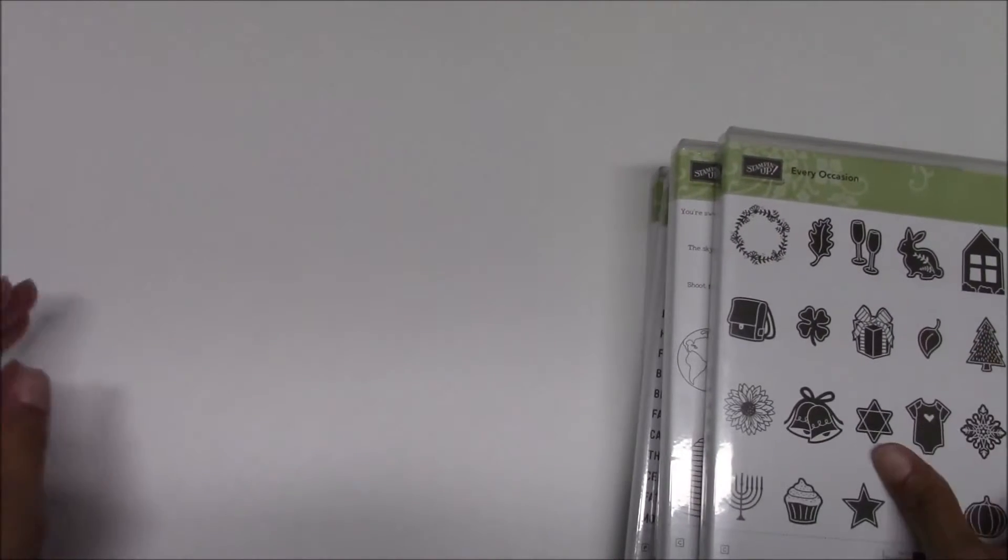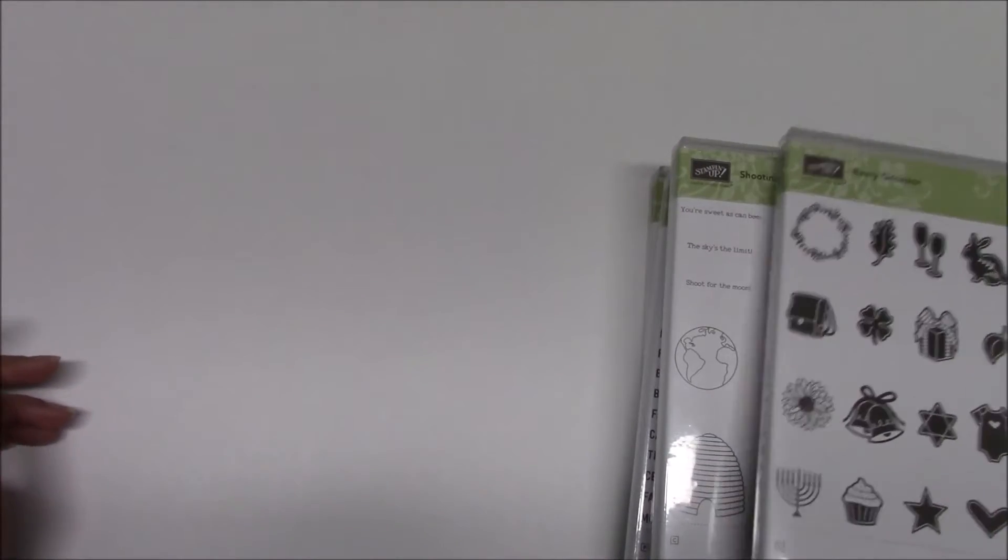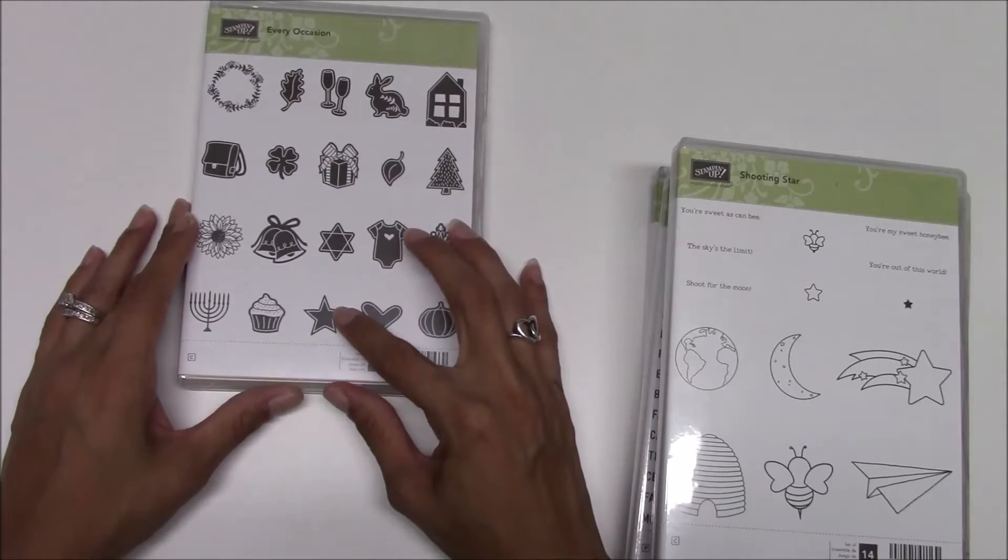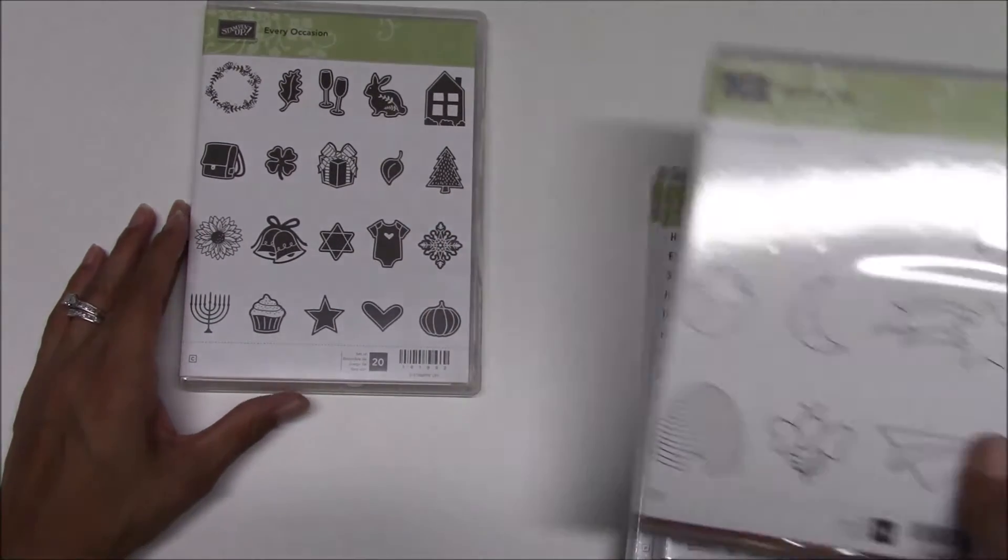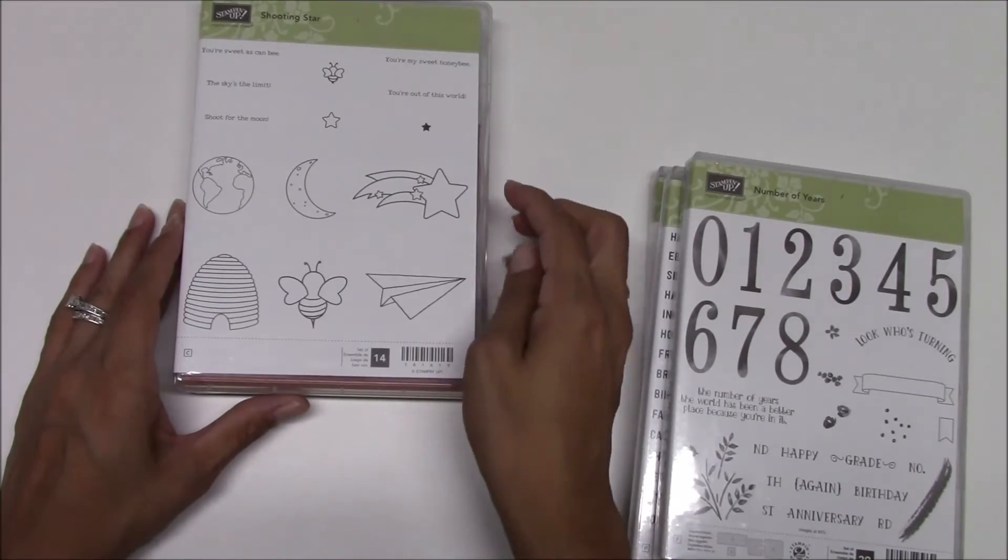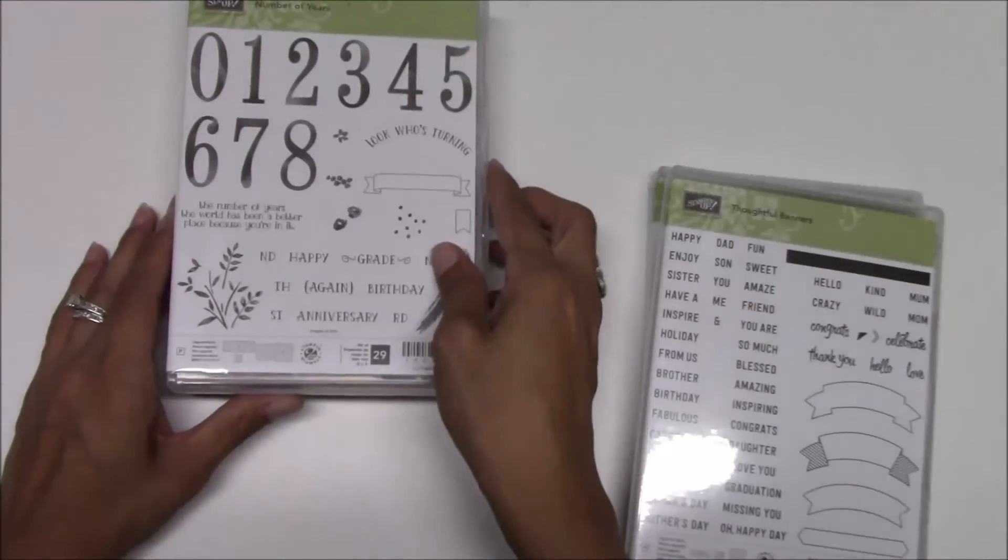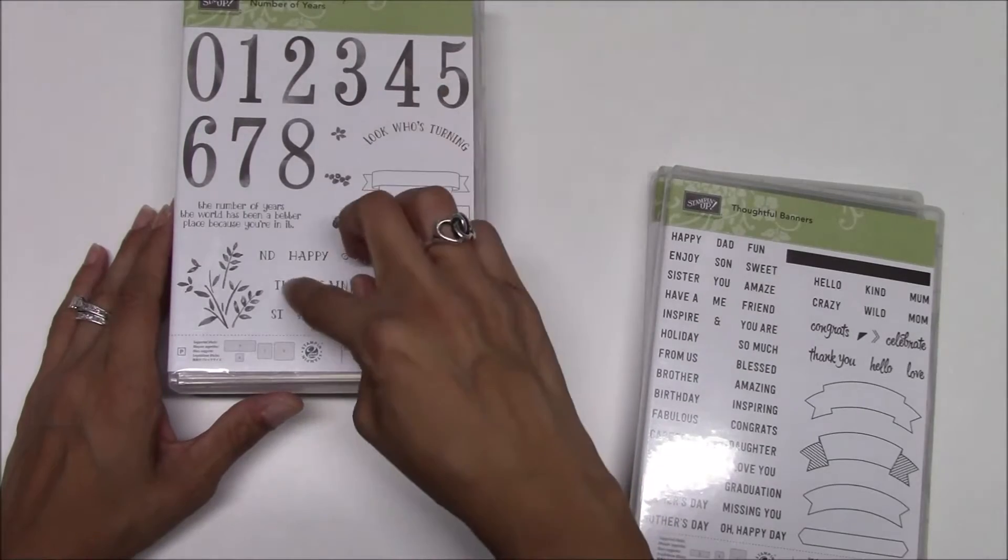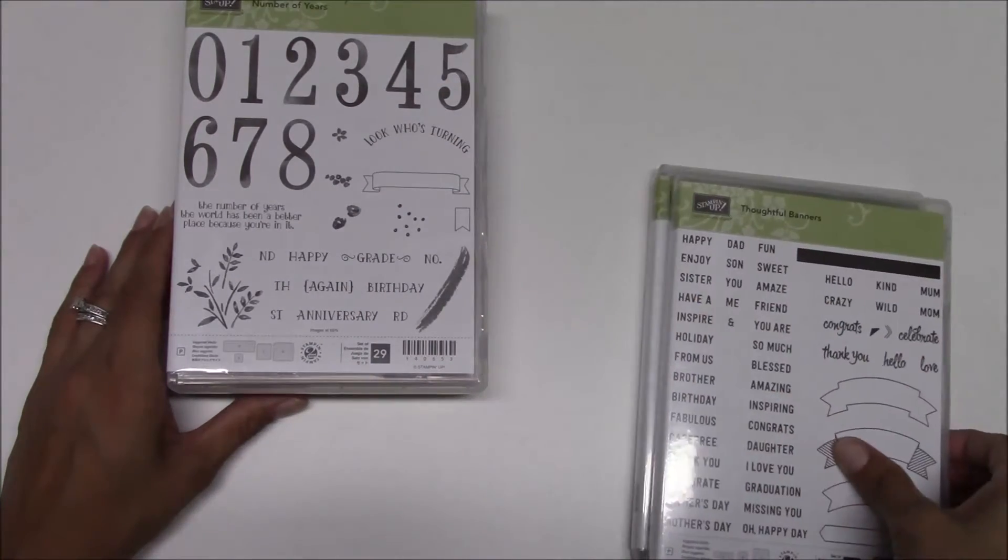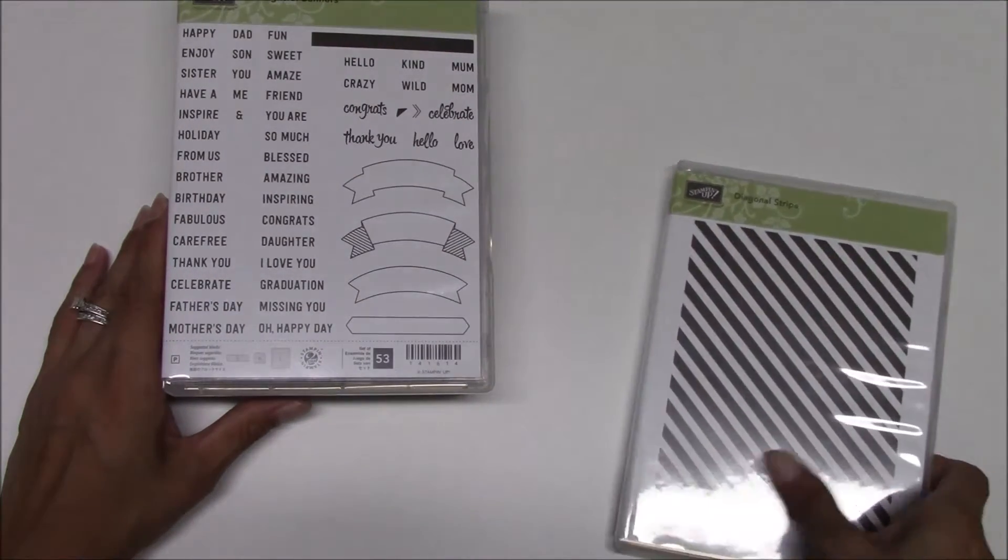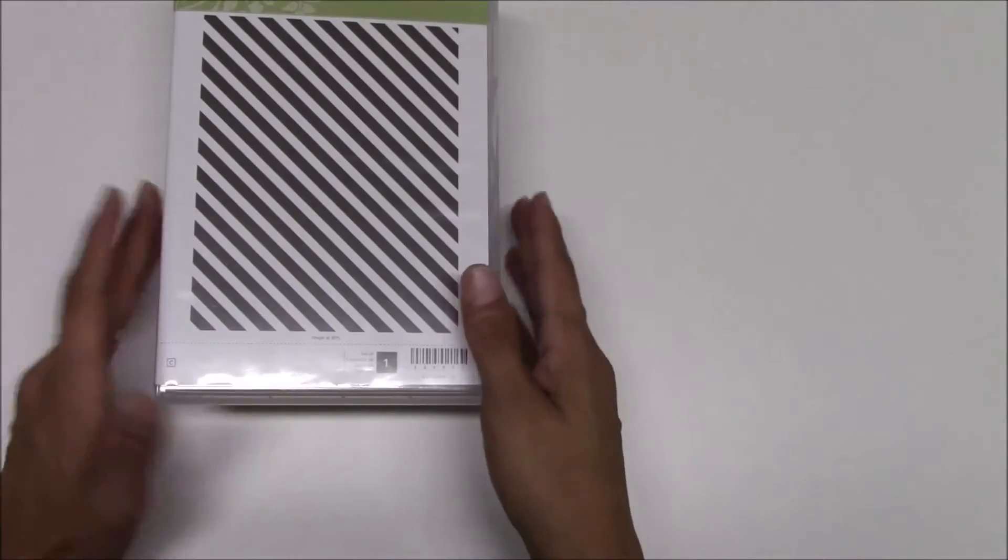We are using quite a bit of different stamp sets, but you can use what you have. We're going to be using the star from Every Occasion, the little stars from Shooting Star, the four from Number of Years, the Happy from Thoughtful Banners, and the diagonal stripe.